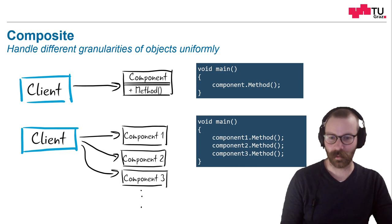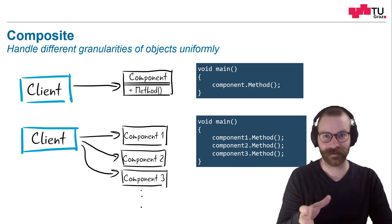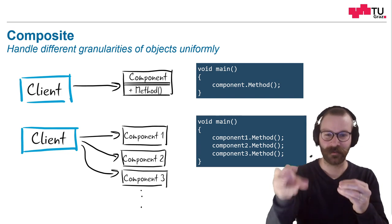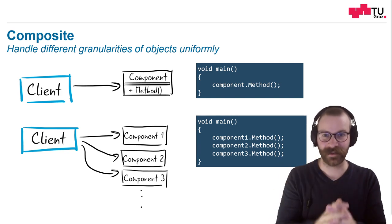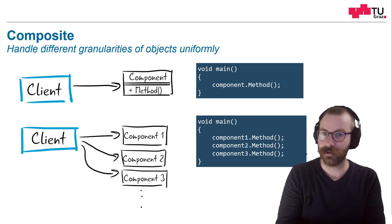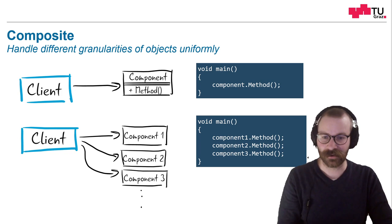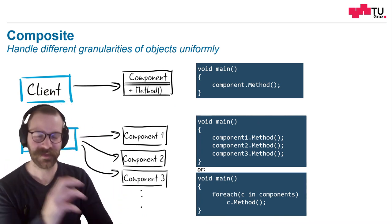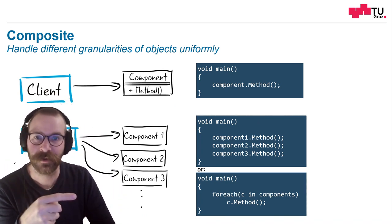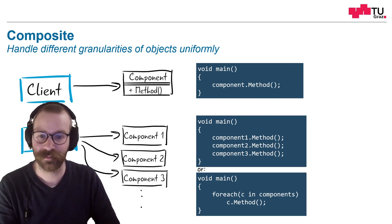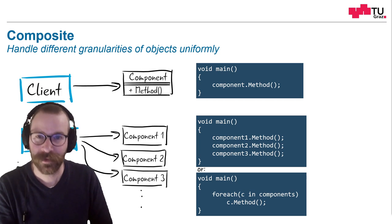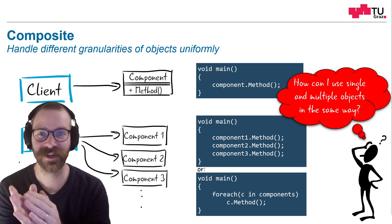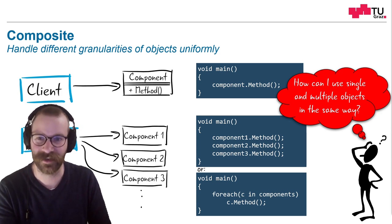This is one way to do it. If you want to do it more flexibly, let's say we store these components in a list. Because currently, if we do it like this, we are really bound to these three components. What if we want to make the list more flexible? Then let's just store all these components in a list and iterate over them in a for-each loop. Here, we are just looping over all components and calling the method we want to call. But the problem is, what if we don't know how many objects we will call? How can we use single and multiple objects the same way? That's the problem we want to tackle with composite.